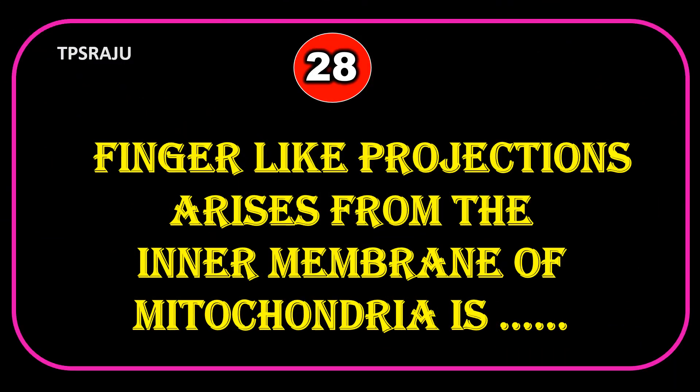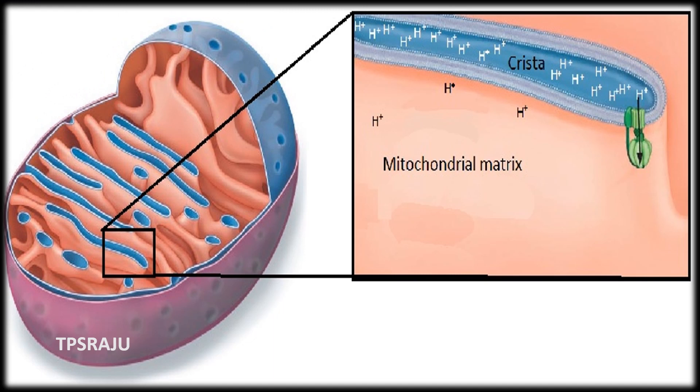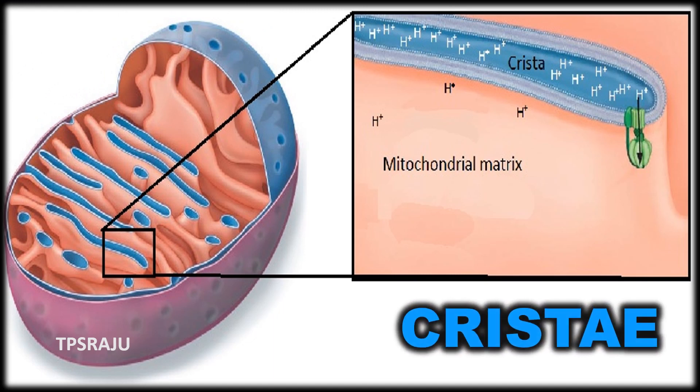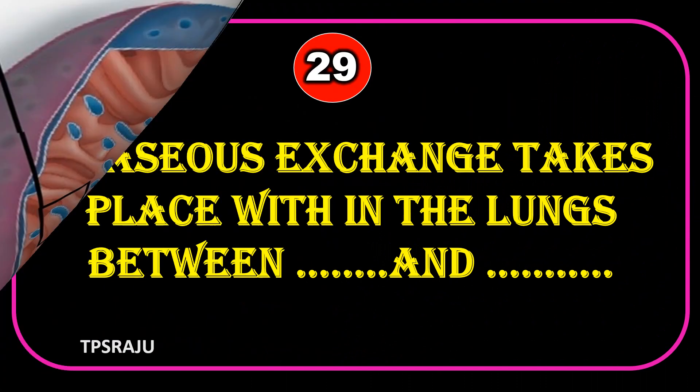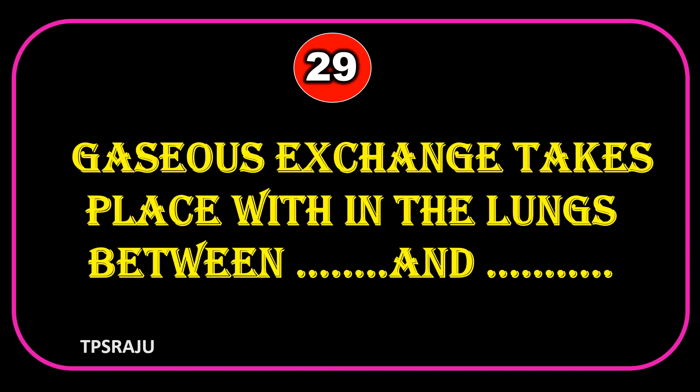The finger-like projections arising from the inner membrane of mitochondria are called cristae.